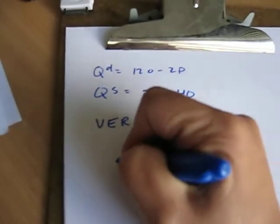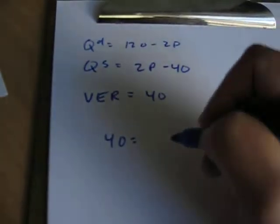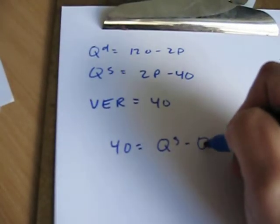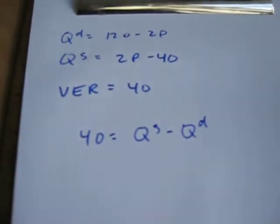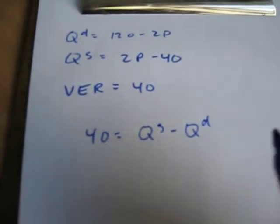So, with the VER, we're putting a limit of 40 on the amount that we send out. Quantity supplied minus quantity demanded, that's our level of exports. Remember, with the quota, that was reversed. Keep track of that.